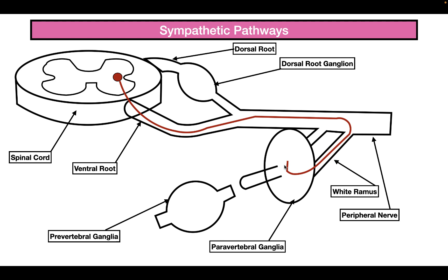It's here where they synapse with the post-ganglionic neurons. These post-ganglionic neurons then go through the gray ramus, back into the peripheral nerve, and then to the target cell.